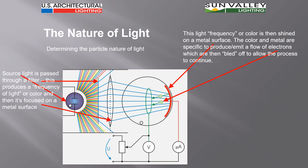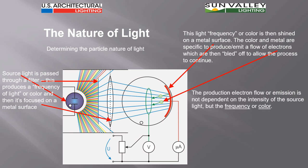By doing that, the light frequency or color is shined on a particular kind of metal and the two of them working in conjunction with each other would then allow or produce electrons to flow. As long as they're emitted from that metal, this process would then continue and have an electrical flow.